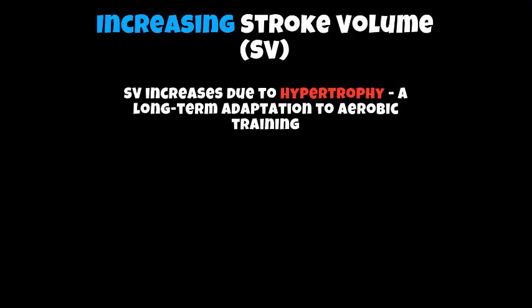An increase in stroke volume is mainly due to what we call hypertrophy, which is a long-term adaptation to aerobic training. Essentially, as we do more and more long-term aerobic work — such as continuing to go jogging two or three times a week and building that up — your heart ventricle walls will start to thicken and increase in strength.